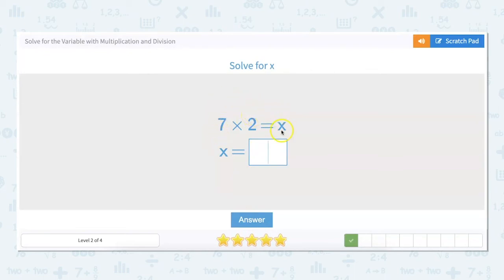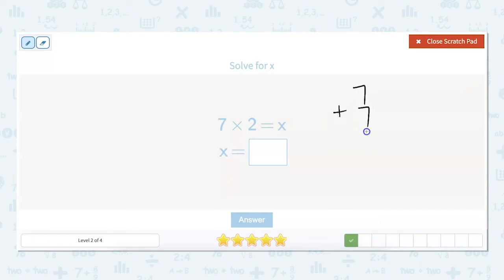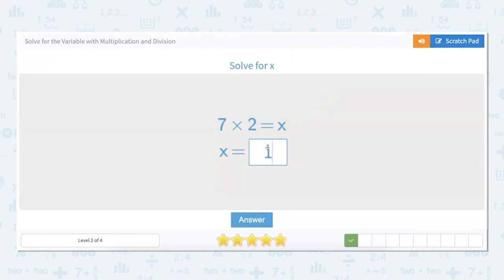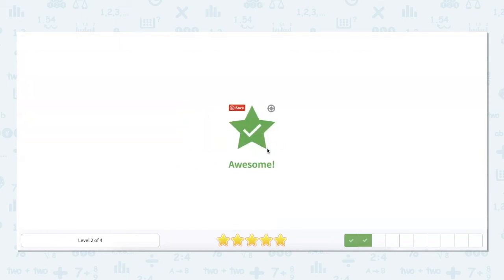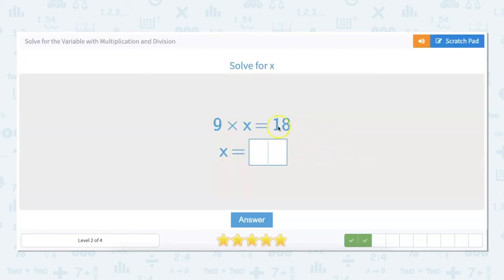7 times 2 equals x. So for this one let's pretend that we don't know our multiplication tables. So what is another way that I could figure out 7 times 2? Well 7 times 2 is just 7 plus 7 because there's two of them. And that equals 14. So 7 times 2 equals 14.